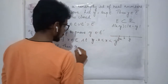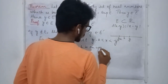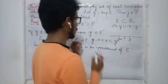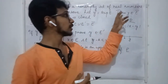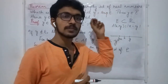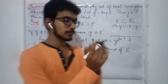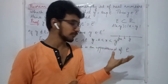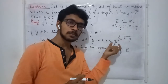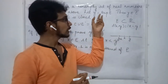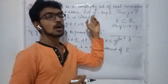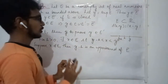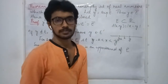Suppose x does not belong to E. Then y minus h would be an upper bound of E. But y is the supremum — the least upper bound — and y minus h is less than y, so this violates the property that y is the supremum of E. Therefore, such an x in E must exist in the interval (y minus h, y).